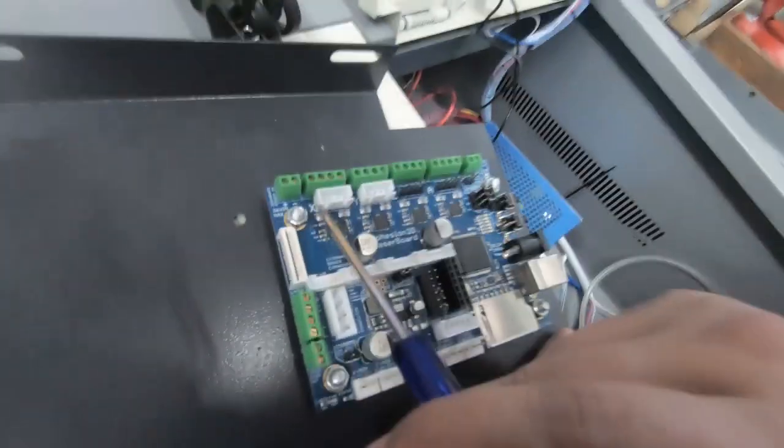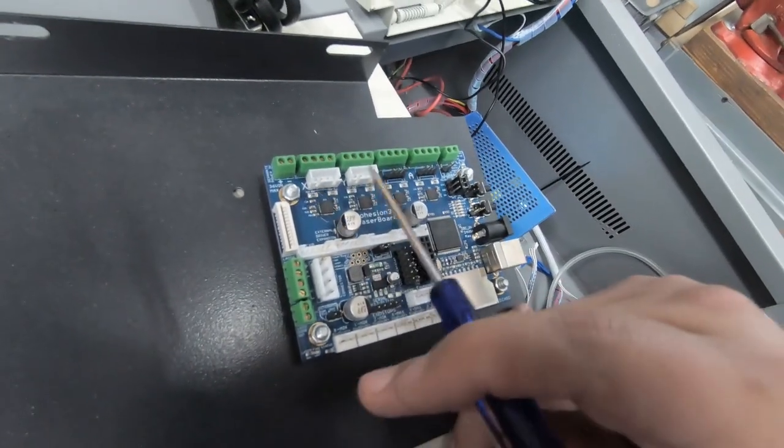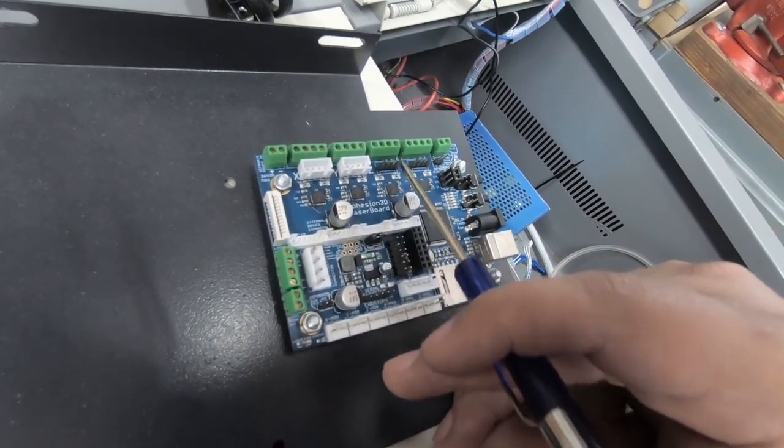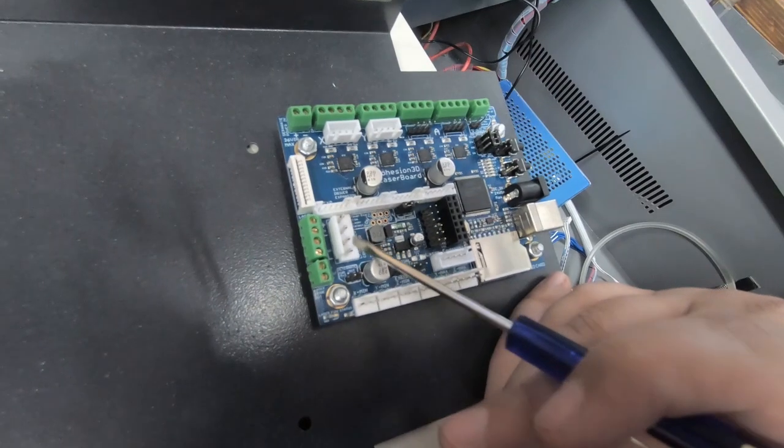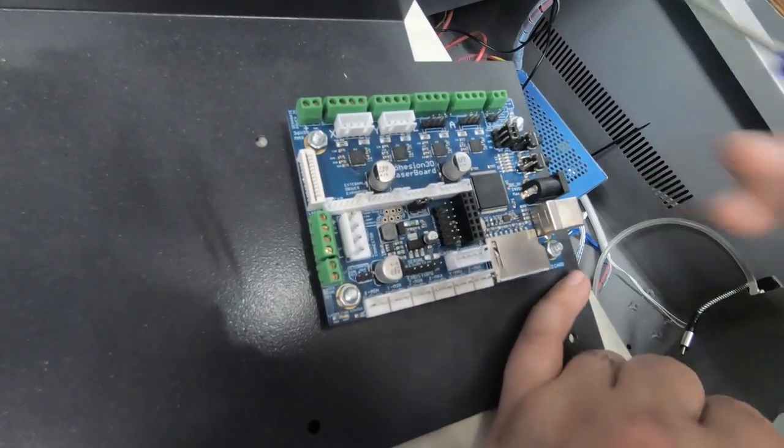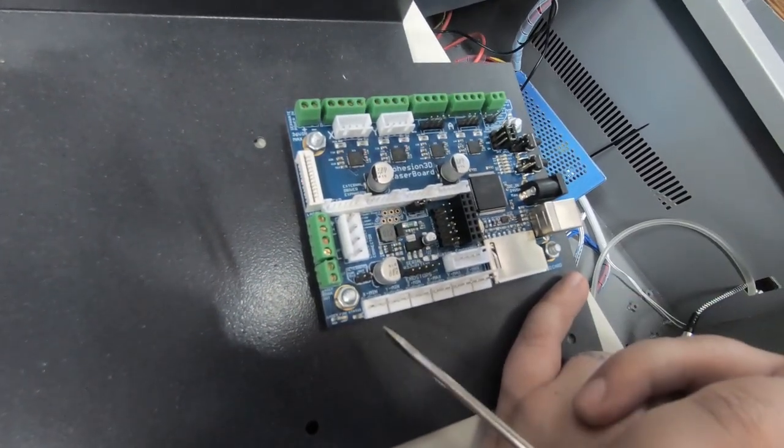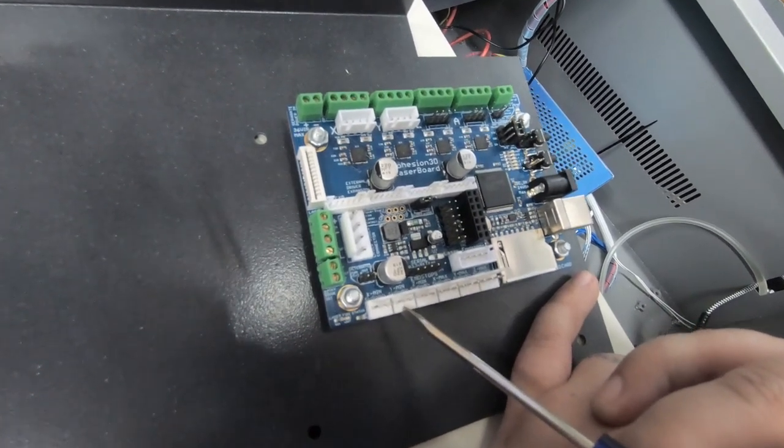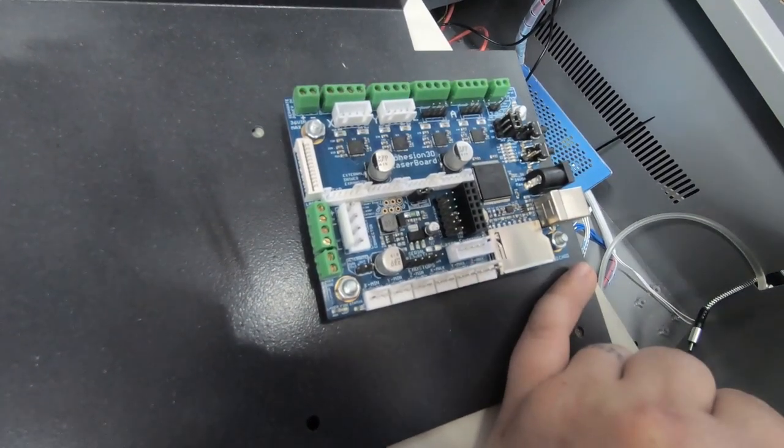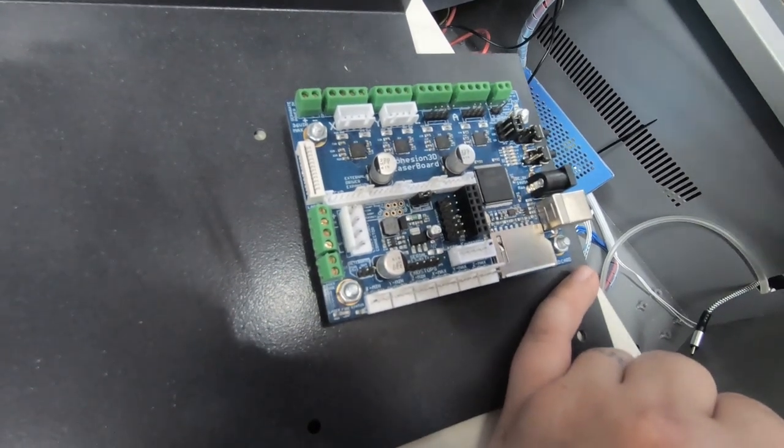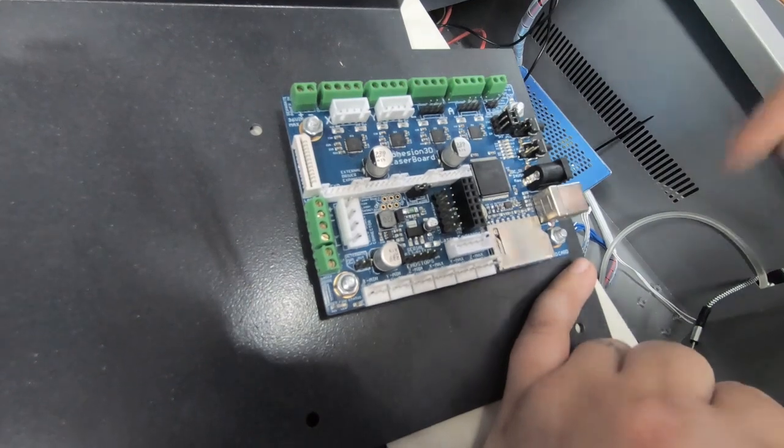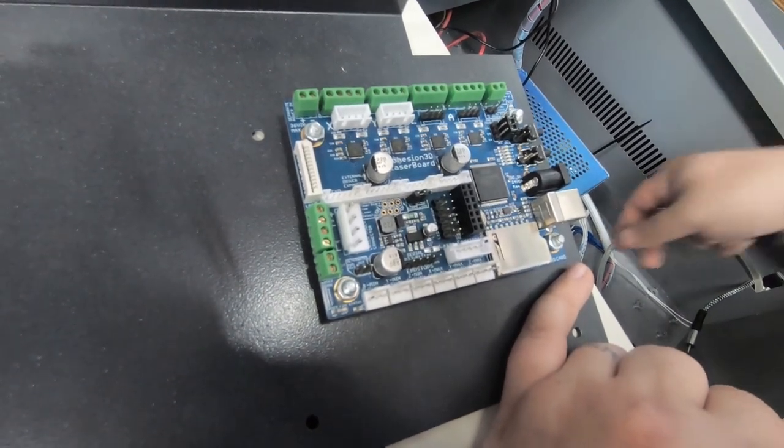So here we have our X motor, our Y motor. We're not using a Z, but that's where you would have Z. Power here coming straight from the power supply. And then we've got our X limit switch and Y limit switch. So I'm not quite sure if ours are wired the right way after being on the Monport, but we will test that and find out. So let's get this down in the laser and get it all plugged in.